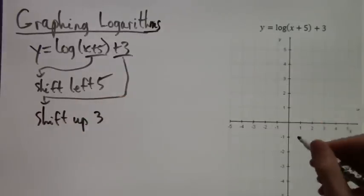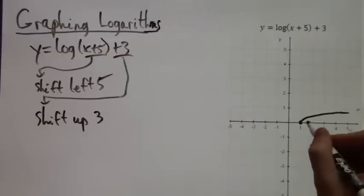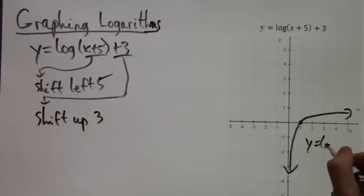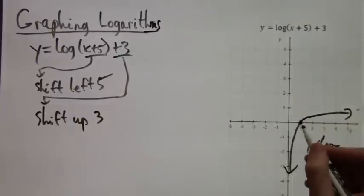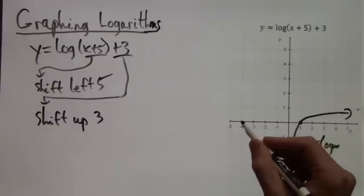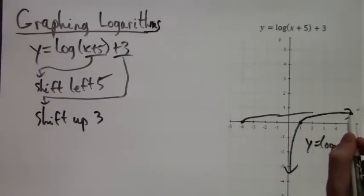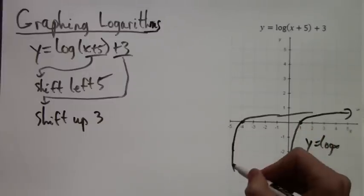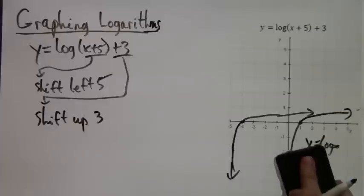Now let's make some sketches. First, just log of x—if you remember, this is what it looked like: starts near the y-axis and goes to the point (1,0) and increases pretty slowly. Now we're shifting it left five. Instead of going through (1,0), it goes to (-4,0) and increases very slowly.